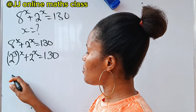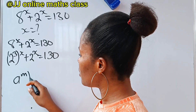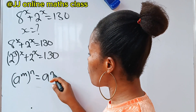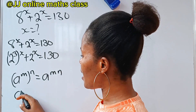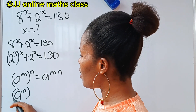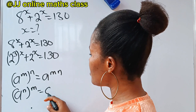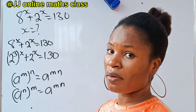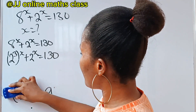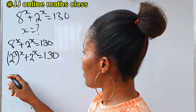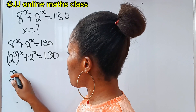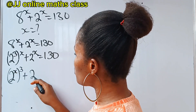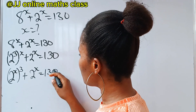Recall that 8 to the power of m raised to the power of n is equal to 8 to the power of m times n. So that simply means I can switch the position of these powers. If we do that, we have 2 to the power of x raised to the power of 3, plus 2 to the power of x, is equal to 130.